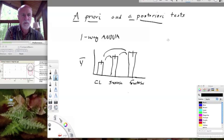In fact, the number of comparisons possible is n times n minus 1 over 2. So here, for example, we have three groups, so we have 3 times 2 divided by 2, or three comparisons that we could make.